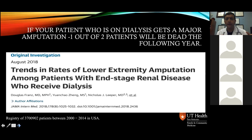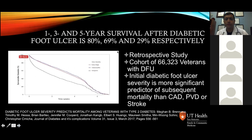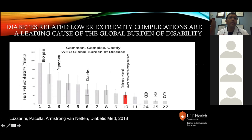A large diabetic foot ulcer study from the VA, looking at more than 66,000 patients, found that initial diabetic ulcer severity is a more significant predictor of subsequent mortality than coronary artery disease, peripheral vascular disease, or stroke. The WHO has also identified lower extremity diabetic complications as a leading cause of global disability, with diabetic ulcers now ranking within the top 10 reasons for global burden of disability.